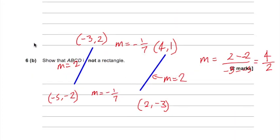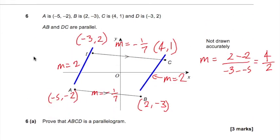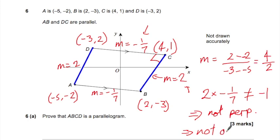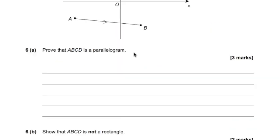So part B says, show that ABCD is not a rectangle. So a rectangle is a special kind of parallelogram, but all these would have to be 90 degrees. So all we need to do to prove it's not a rectangle, is to show just one of them is not 90 degrees. Well, if so, let's pick this corner, C. If this was 90 degrees, then these two gradients would have to multiply together to give minus 1. But we can say 2 times minus 1 over 7 does not equal minus 1. So therefore, not perpendicular, therefore, not a rectangle. We don't need to do it for all four because we just need to prove it for one of them. And that is the end of the paper.